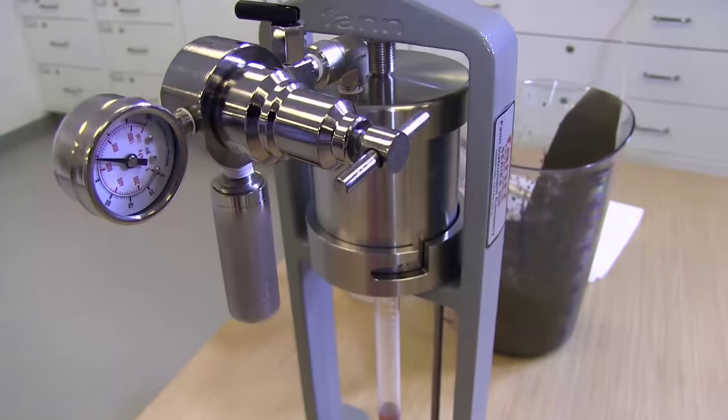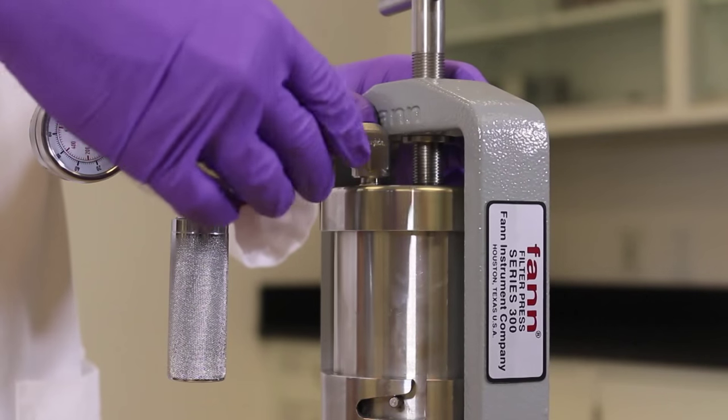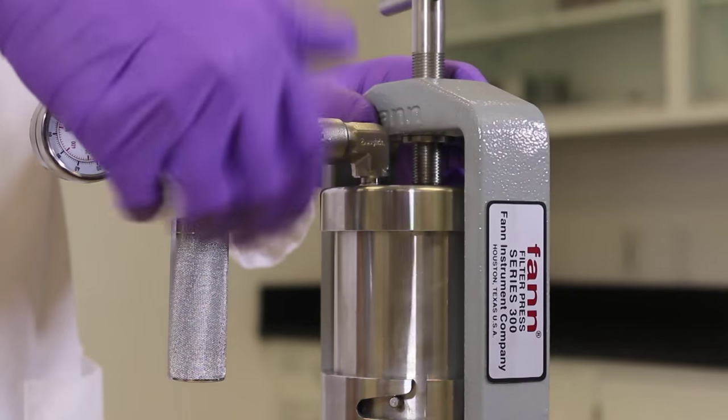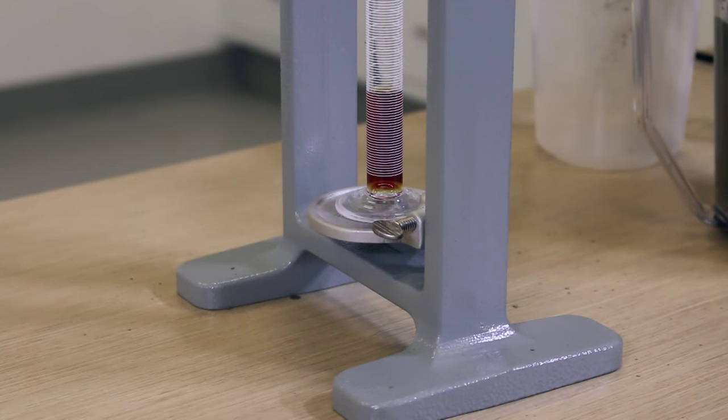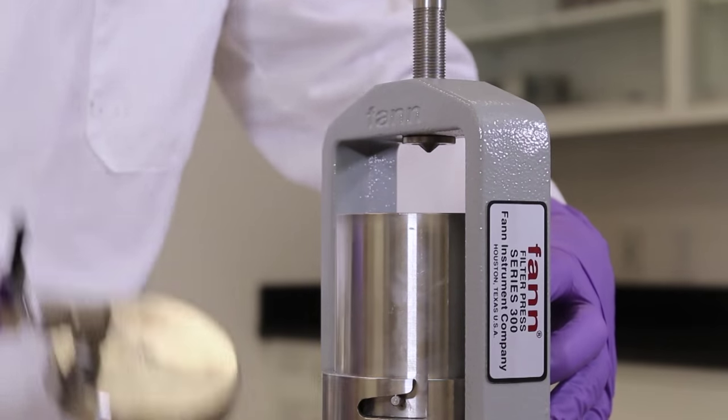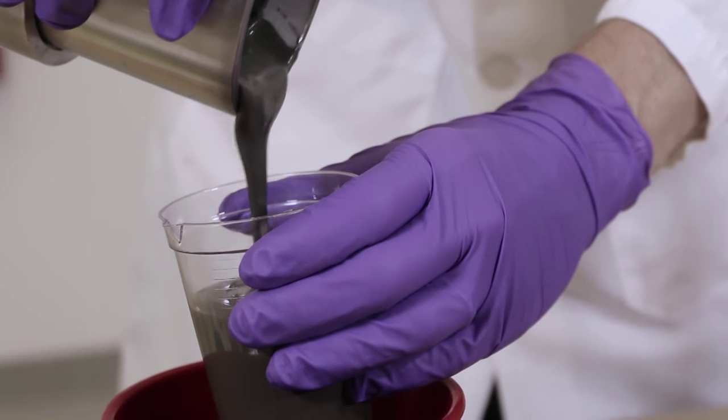Now that we've let our filter press run for the full 30 minutes, we'll back off the pressure. We have a filtrate of 20 mils versus totally dewatered in our first sample. Let's open this up. I still have a flowable cement slurry.